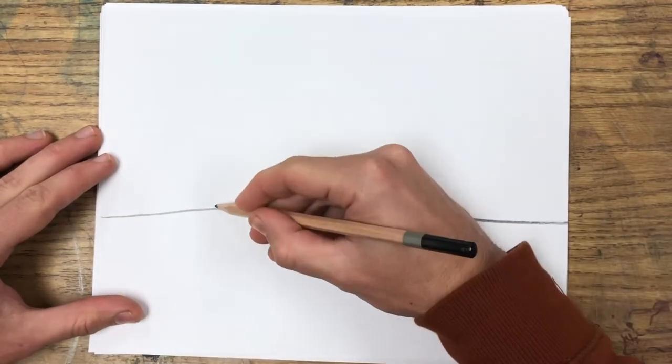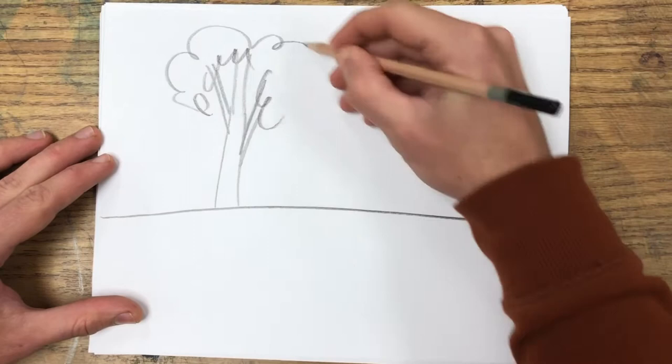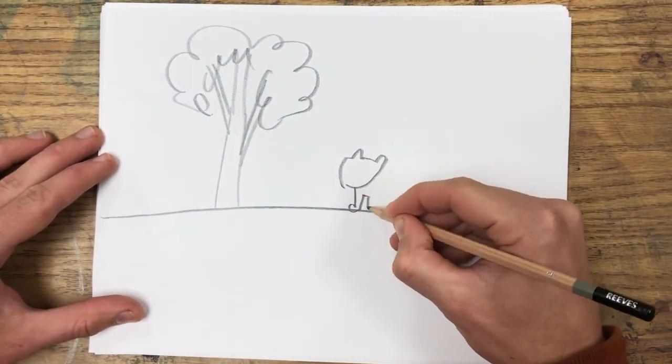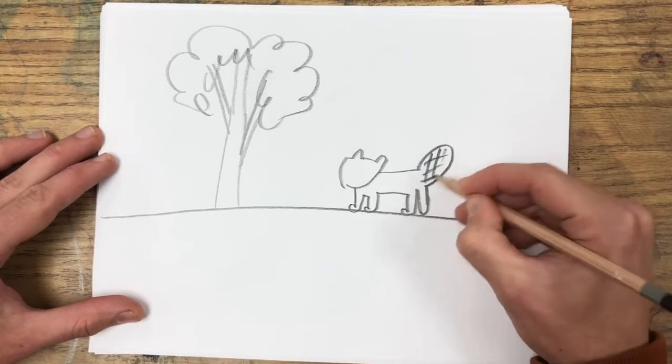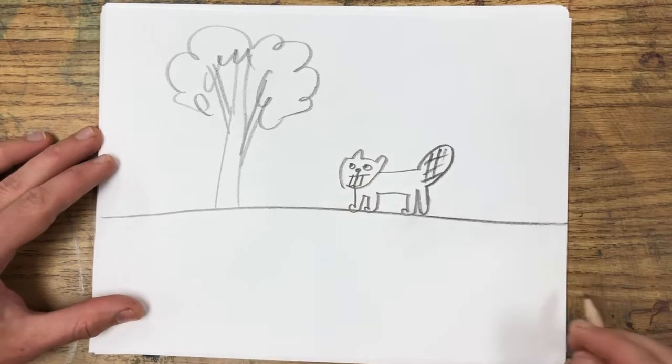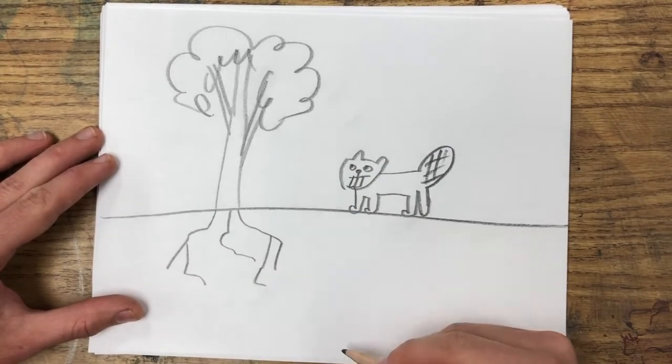Now once you get a little bit better at drawing, you may draw the ground and then put all of your subjects on that line that represents the ground. Then that line becomes like a tightrope, a line that separates earth and sky.